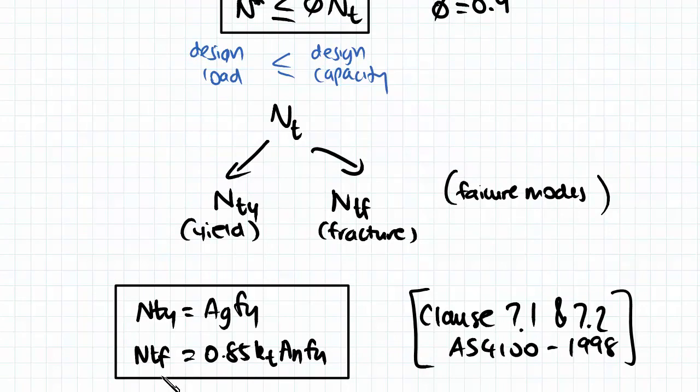and the fracture section capacity is 0.85 times a correction factor KT times the net area times the fracture stress. This can be found in Clause 7.1 and 7.2 of AS 4100.